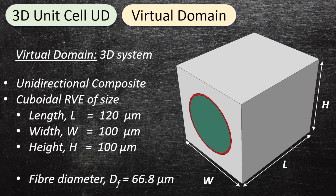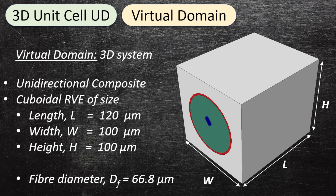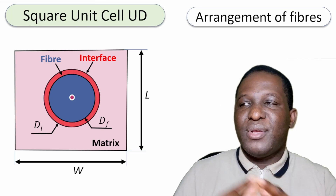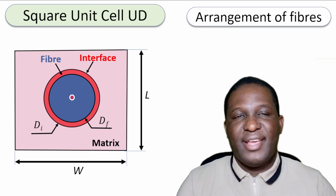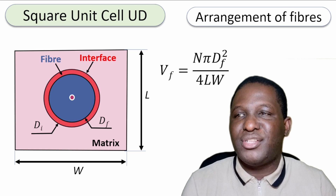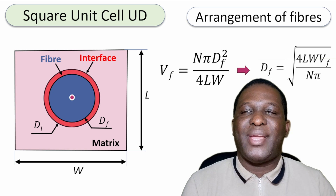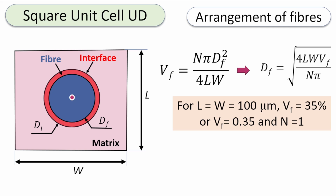The domain is a cuboidal representative volume element with a length of 120 microns in the axial direction, and in-plane dimensions of 100 microns in length and width. The fiber diameter is 68.8 microns. Looking at the 2D representation, using the volume fraction calculation and assuming circular fibers, we can define the diameter accordingly. The candidate material has a volume fraction of 85%, with one fiber in the RVE, giving a radius of 33.38 microns.